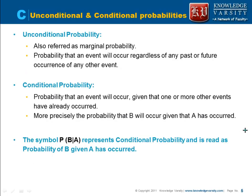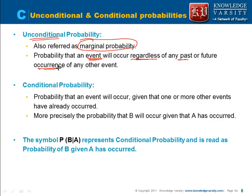Let us see the next item. Here we want to understand the difference between the unconditional probability and the conditional probability. The unconditional probability is also known as marginal probability. This marginal probability is the probability that an event is going to occur regardless of any past or future occurrence of the event.